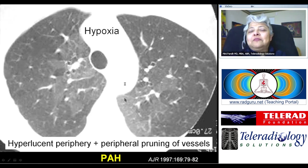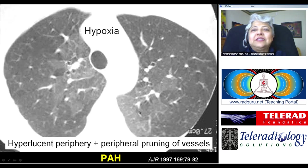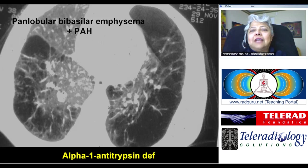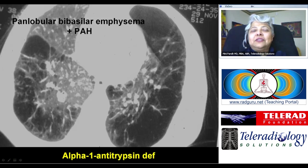An example of pulmonary arterial hypertension from AJR 1997 shows peripheral hyperlucency and relatively denser central lung zones. The central vessels are prominent and there is really peripheral pruning — you don't see the branching pattern of vessels that you would normally see. This is heterogeneous lung caused by pulmonary arterial hypertension. An example of alpha-1 antitrypsin deficiency shows panlobular bibasilar emphysema and attenuation of vascularity due to associated pulmonary arterial hypertension — heterogeneous lung caused by a combination of emphysema and pulmonary arterial hypertension.